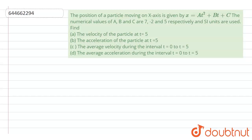Hello everyone, let's start the question. The question says that position of a particle moving along x-axis is given by x equals at squared plus bt plus c. The numerical values of a, b and c are 7, minus 2 and 5 respectively. SI units are used. Find the velocity of the particle at t equals 5, acceleration at t equals 5, average velocity during the interval t equals 0 to t equals 5, and average acceleration during the interval t equals 0 to t equals 5.